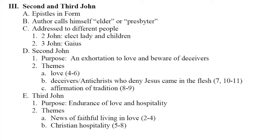2 and 3 John are short letters that follow more of the epistolary format. The author calls himself elder or presbyter. These are addressed to different people. 2 John is addressed to the elect lady and her children. The purpose of this short letter is an exhortation to love and to beware of deceivers. The themes: verses 4-6 talk about love; verses 7-11 warn against deceivers and antichrist who deny Jesus came in the flesh; and finally it talks about affirming tradition.